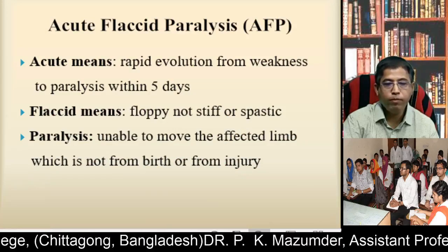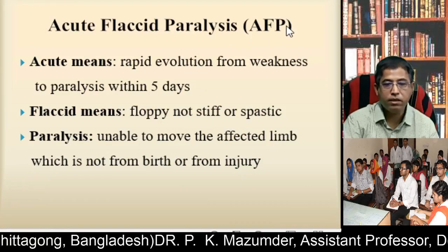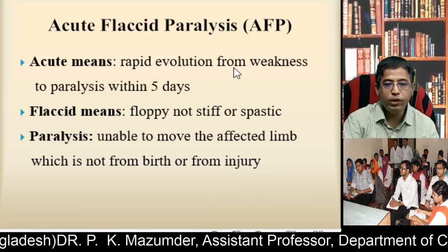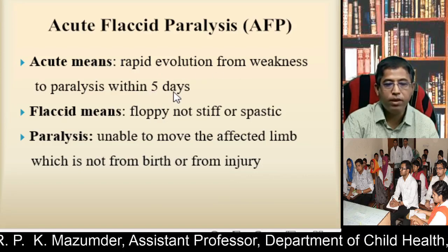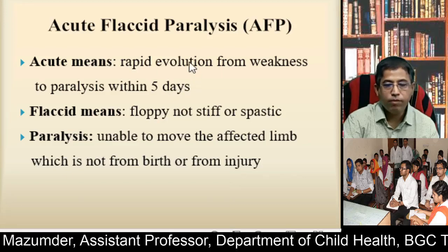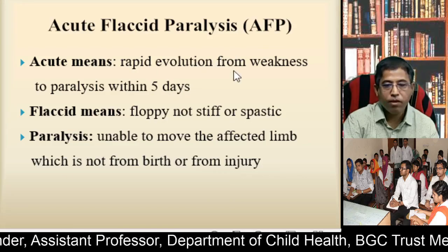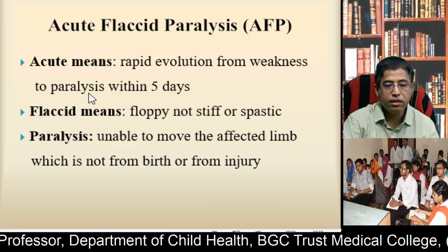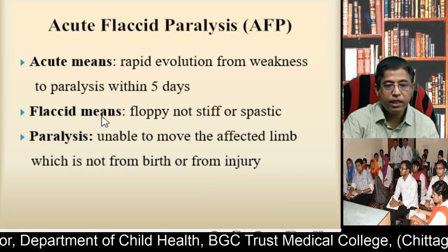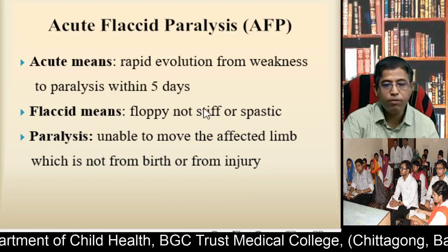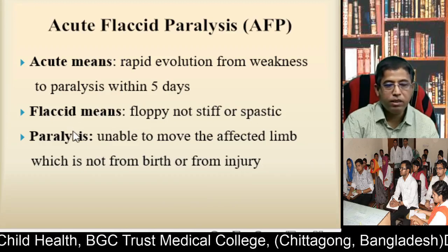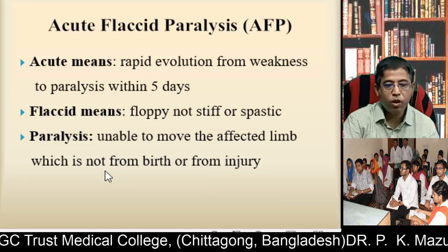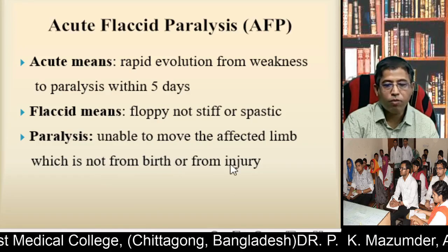What do you mean by Acute Flaccid Paralysis? Acute means rapid evolution from weakness to paralysis within 5 days — gradually the patient develops weakness to paralysis within 5 days. Flaccid means floppy, not stiff or spastic. Paralysis means unable to move the affected limb, which is not from birth or from injury.